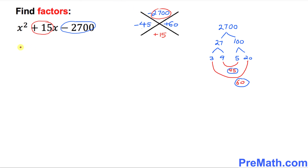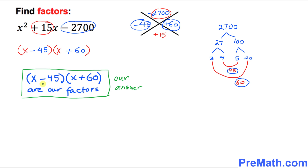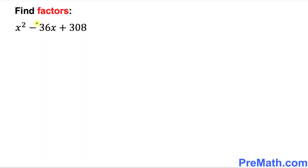Now write down two parentheses with X and X. Place negative 45 in the first and positive 60 in the second. So our factors are (x − 45)(x + 60).